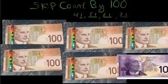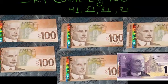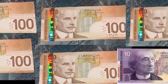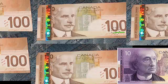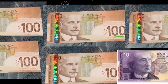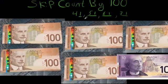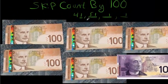Now look at 100. How many 0s are there in 100? There are two 0s, so two numbers on the end are going to stay the same. Let's see how to do that.